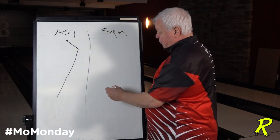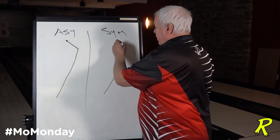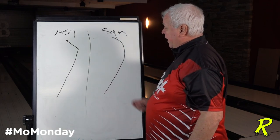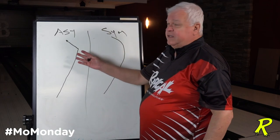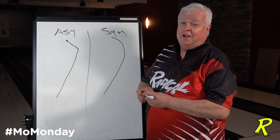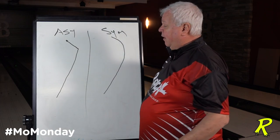When you take a symmetrical ball, you're going to get a gradual, more continuous motion. Both of these can hit the pocket, but one of them will strike more than the other depending on what you bowl on.